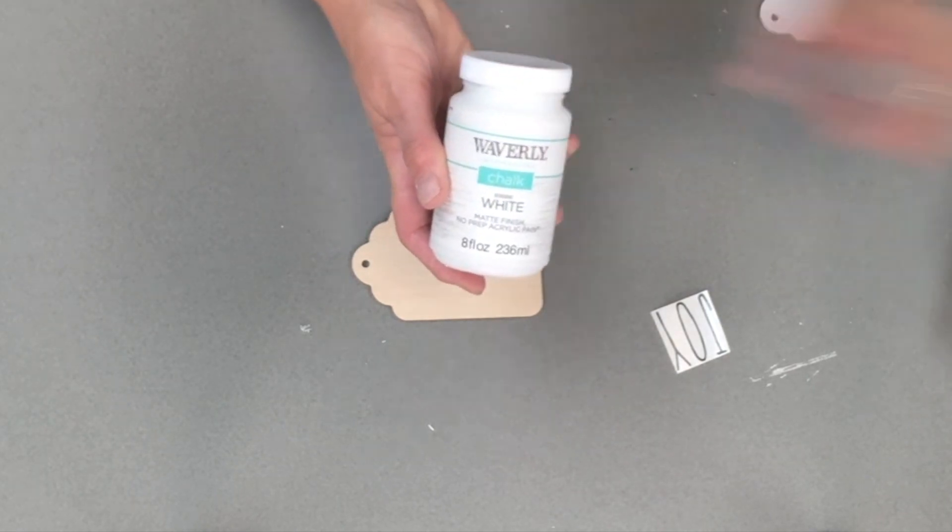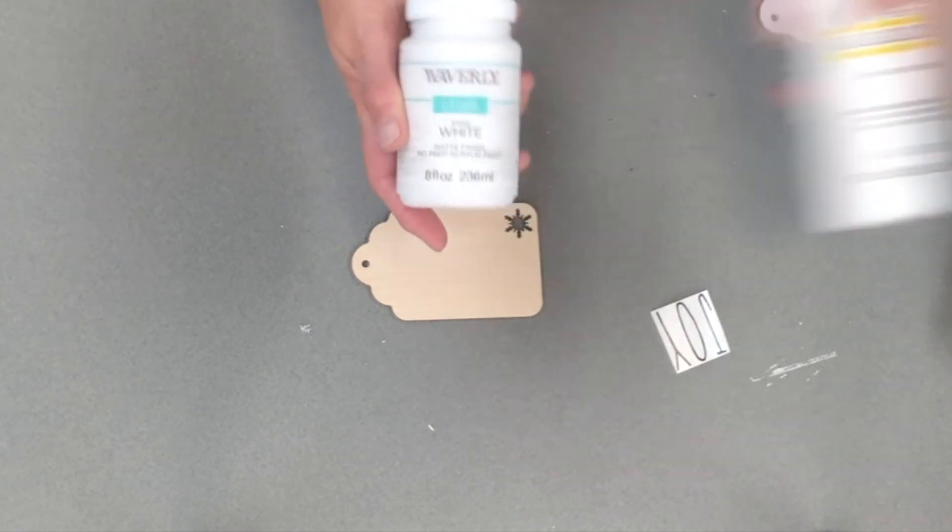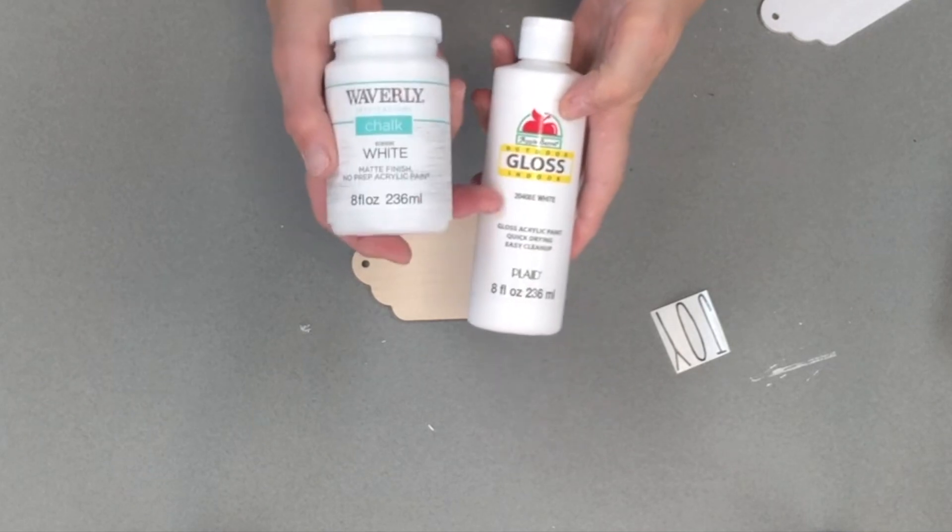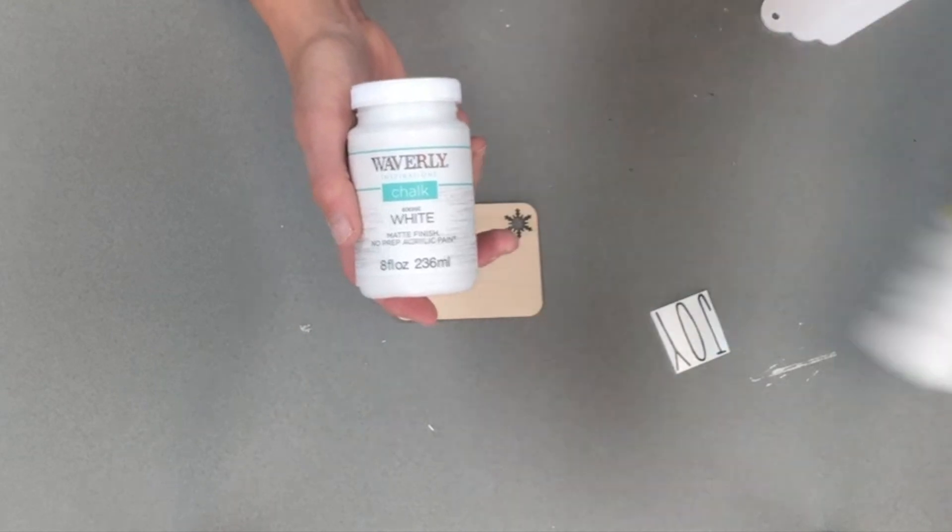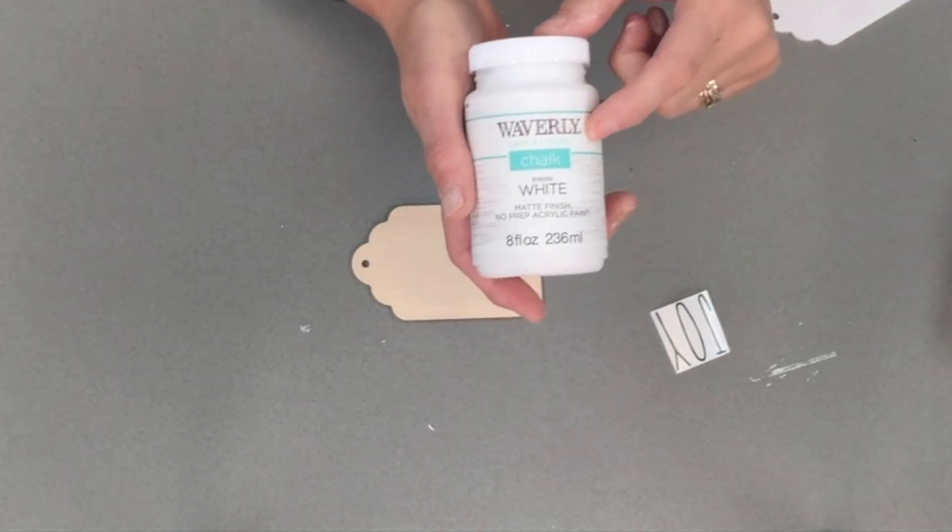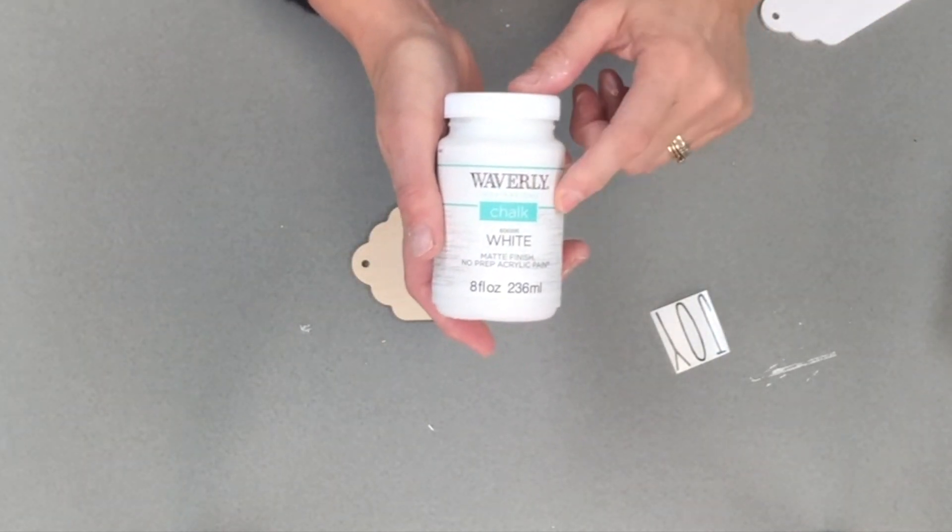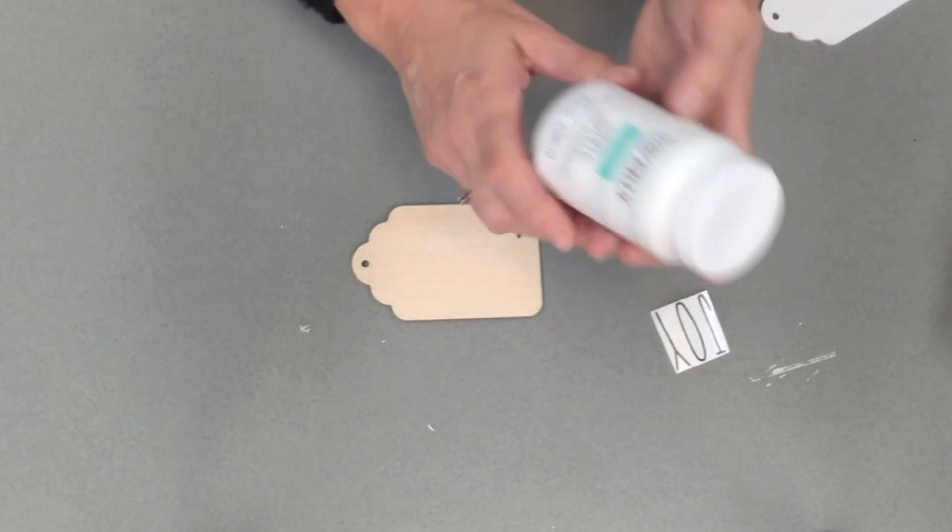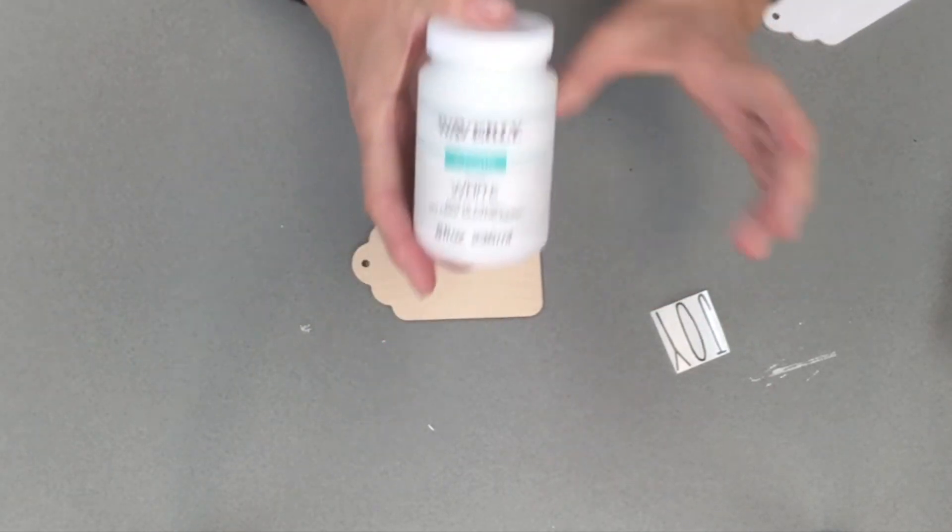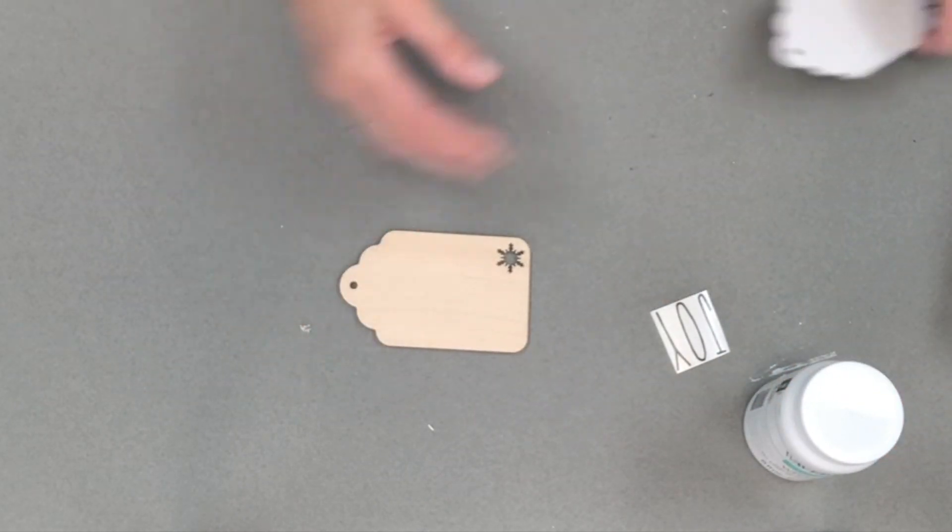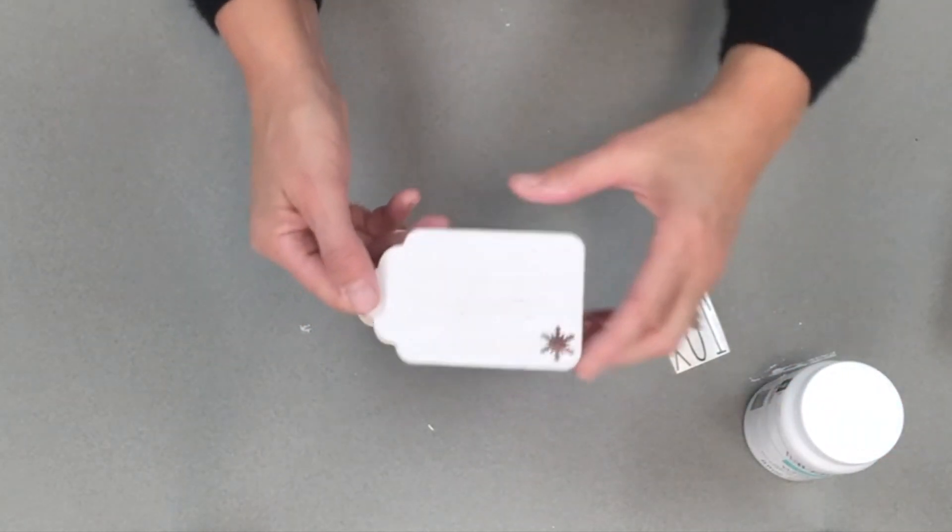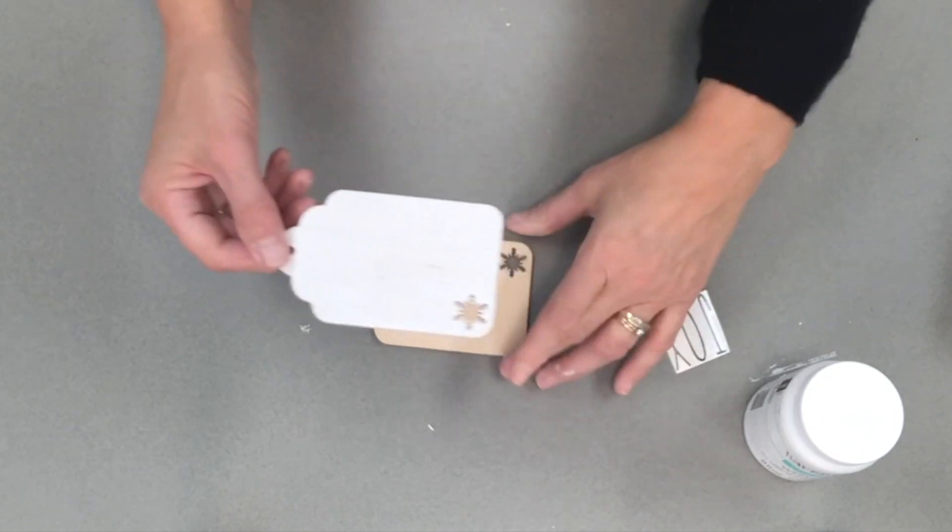Let's go ahead and get started. I'm going to do the painted one to show you guys. I'm using some Waverly chalk. Now I did try an ornament with just the Apple Barrel white paint and it took about three coats to give it a good coat, whereas the Waverly chalk just took one coat.